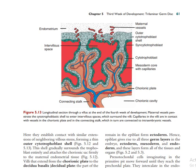The cells of the primary villi from the embryo will not be in direct contact with the maternal sinusoids — they are separated by three layers. The first layer is the extraembryonic splanchnic or somatic mesoderm. The second layer is the cytotrophoblast — as they grow into the maternal space they become cytotrophoblastic cells. The third layer is the syncytiotrophoblast, which is in direct contact with the maternal blood.